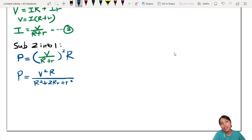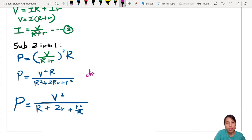I'm going to simplify it one more time. I'm going to divide the top and the bottom of this fraction by R. So then P = V² / (R + 2r + r²/R). Divide by R on the top and the bottom, numerator and denominator. So what I'm having here is what we call the power function.